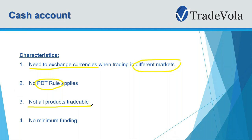Another important thing to know is that you can't trade all products in a cash account. For example, if you want to trade futures or options, you need to have a margin account. Similarly, if you want to do short selling you should have a margin account. The fourth characteristic is there's no minimum funding requirement, so you can start with just one euro or ten dollars — whatever — with Interactive Brokers.